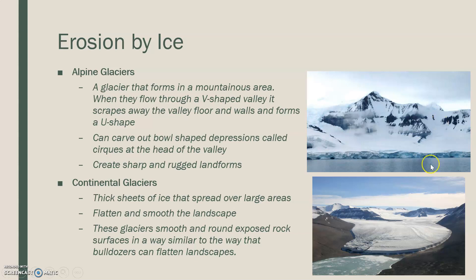Continental glaciers, such as the picture in the bottom, are thick sheets of ice that spread over very large areas. They often flatten out and smooth the landscape around them. These glaciers expose smooth and rounded rock near them and shape surfaces in a way similar to how a bulldozer can flatten the land it comes in contact with.